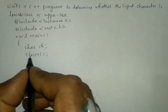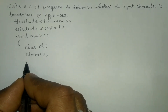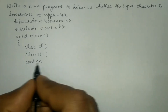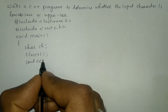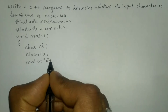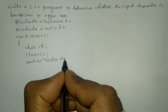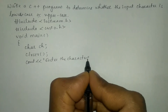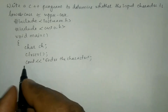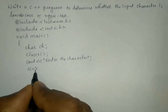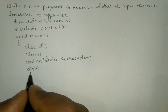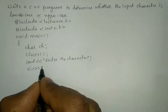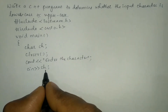Next I'm going to ask the user to enter the character using cout with the stream insertion operator and write "Enter the character" in double quotation marks, then put a semicolon. Now we are going to get the response from the user through the keyboard using cin with the stream extraction operator, storing it in variable ch.